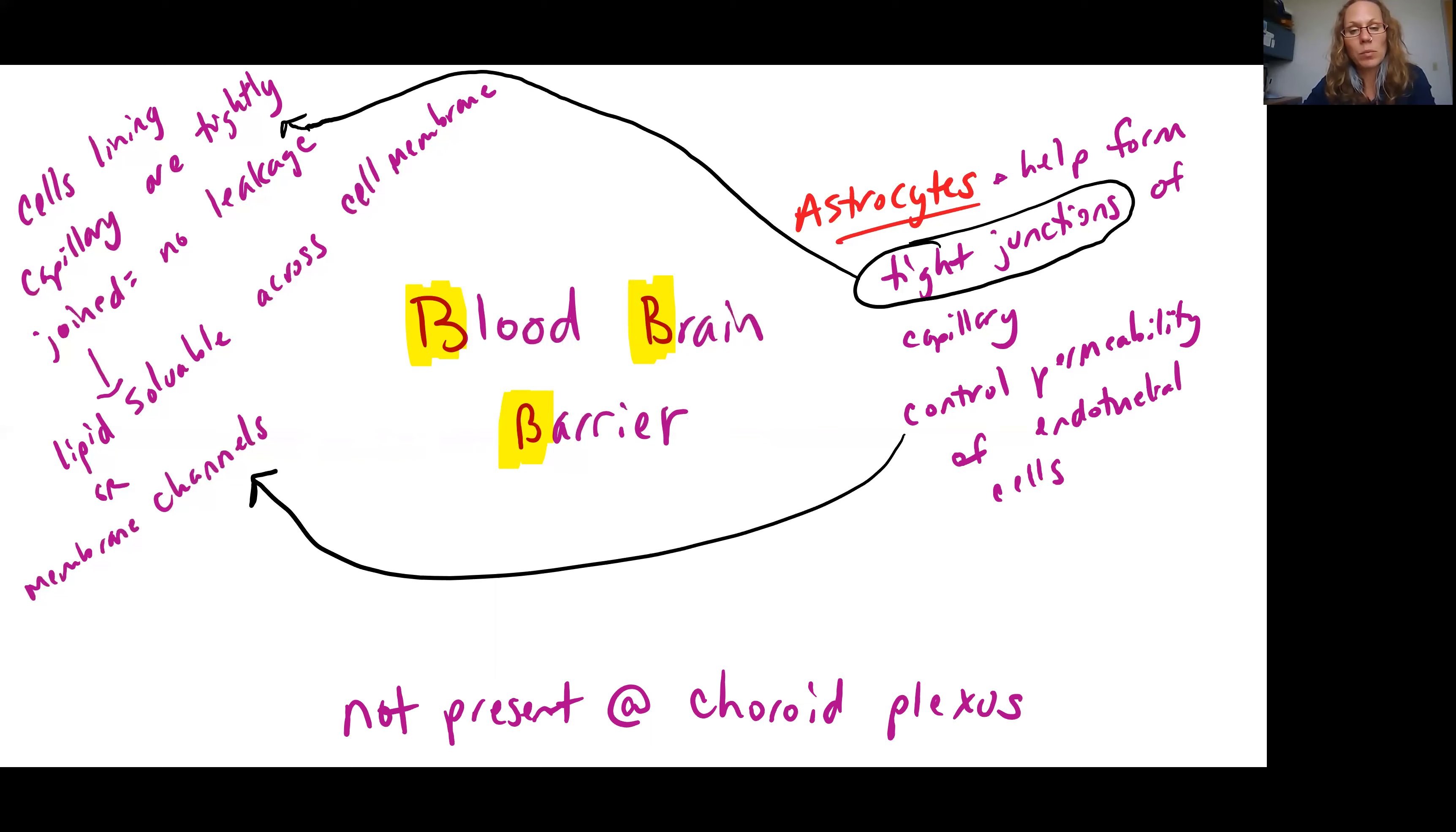It is important to note that the blood brain barrier is not present at the choroid plexus so you don't quite have as much control when you're looking at the formation of that CSF. Okay that is it for chapter 14. Stay tuned for a few videos on chapter 15.